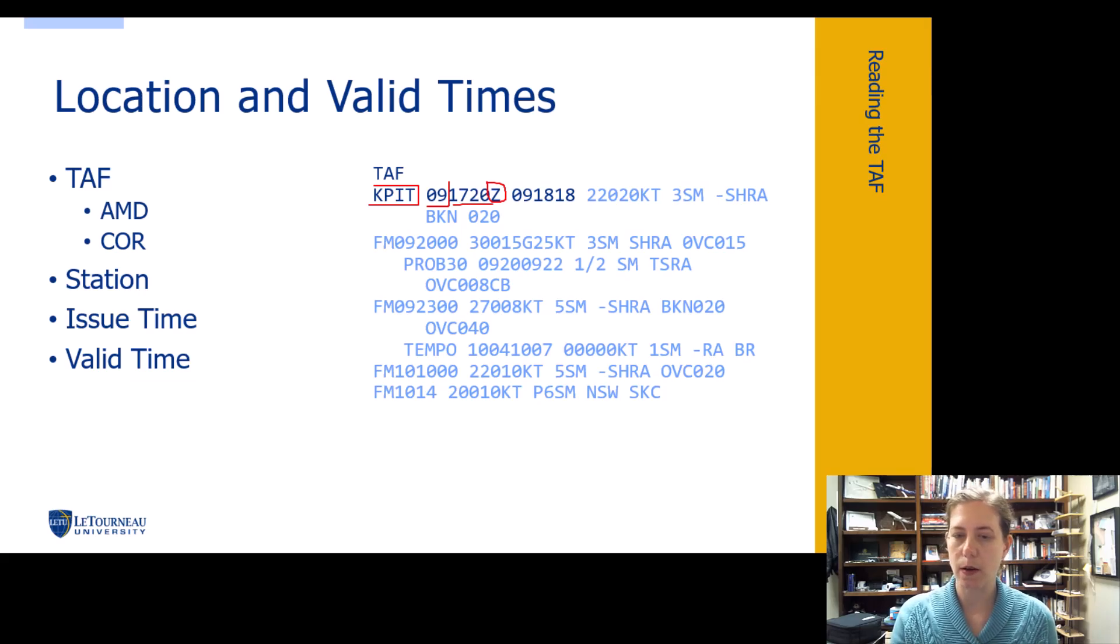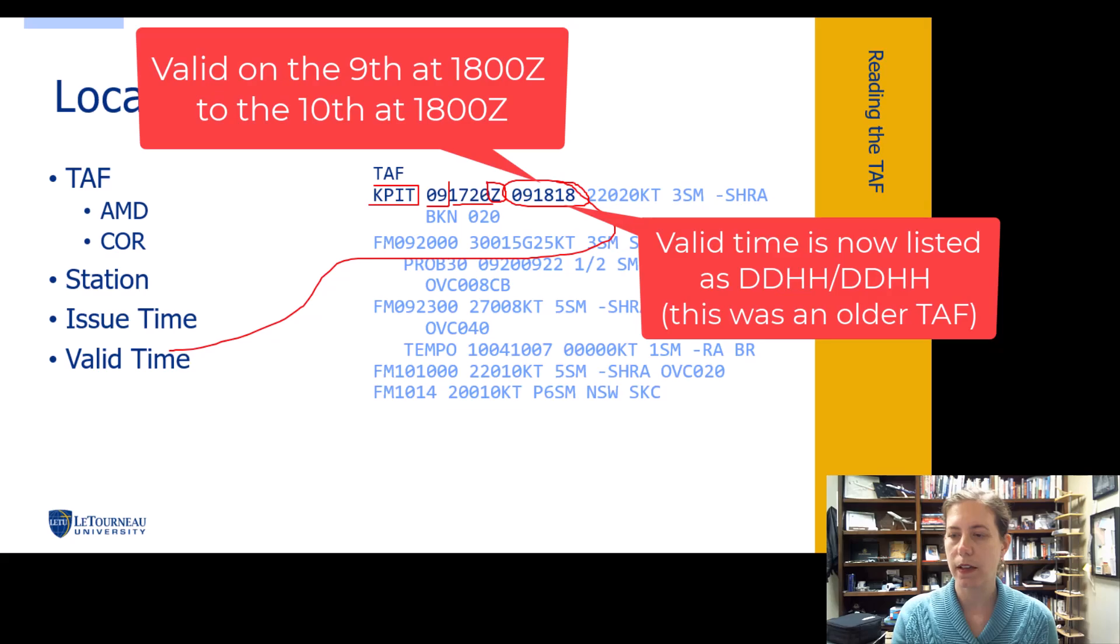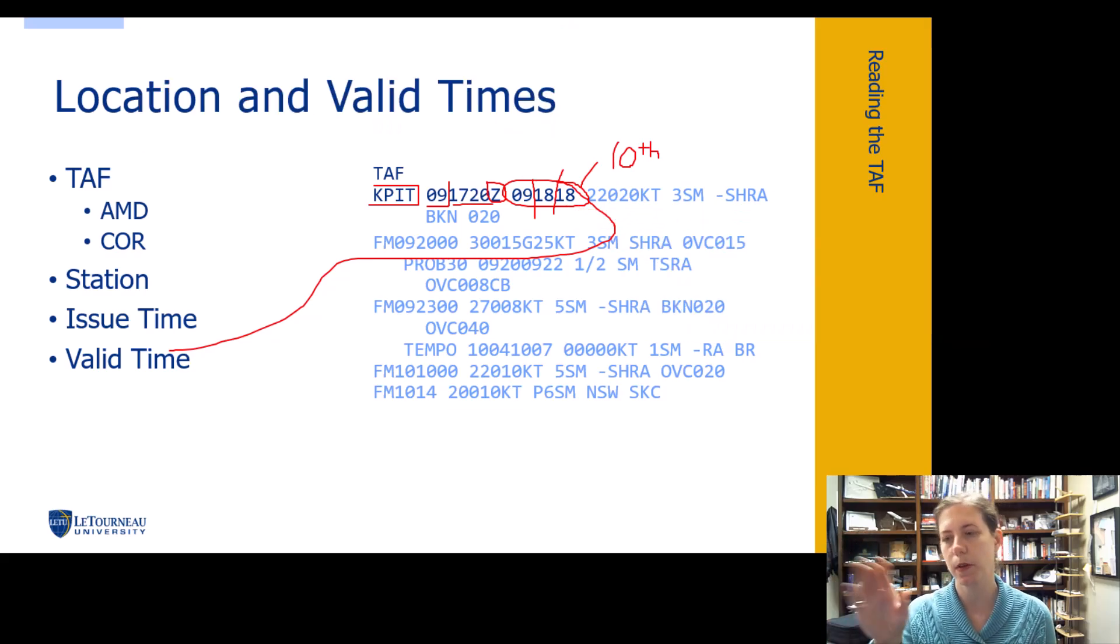The next step is to look at when it's actually valid. So our valid time group is right here. It is valid on the 9th from 18Z to 18Z on the 10th. And there are a few different ways I've seen these written, but just realize that sometimes it might actually say 10th at 18. So you can actually see that. Sometimes it's this way. So just be aware it's good for that valid time period.